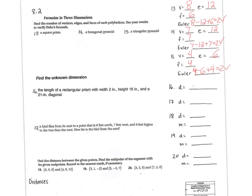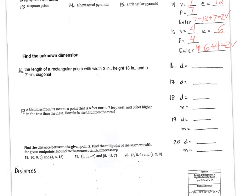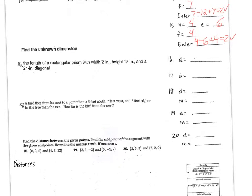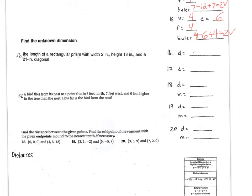Now let's review diagonals. It says the length of the rectangular prism with the width 2, the height is 18, and the 21-inch diagonal. This was like the homework, the second problem, the one in the middle. Right, they're given the diagonal. What's the formula, first of all? The height square.